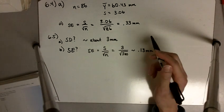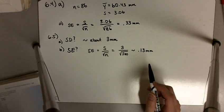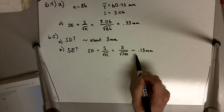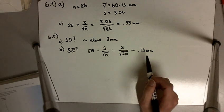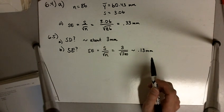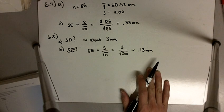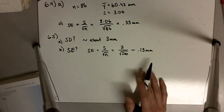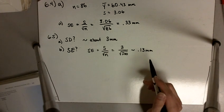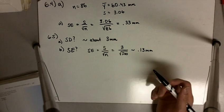And so that tells us that our standard error has decreased, and that's because we expect our sample mean to be a better estimate of the population mean when our sample size is very big.